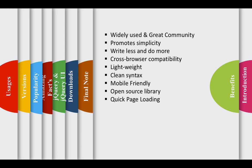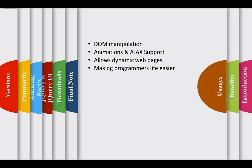Now let's discuss jQuery library usages. It is used for DOM manipulation — DOM stands for Document Object Model. It is also used for making animations; you can use built-in animations or apply custom animations. jQuery library also supports Ajax calls. It allows dynamic web pages because you can make changes at runtime. It makes programmers' lives easy by performing complex tasks in an easier way, and all Ajax calls are cross-browser compatible.